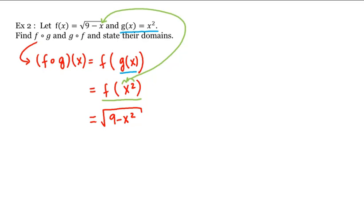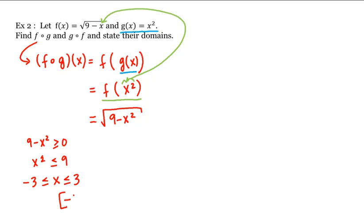Looking at this final form, what is its domain? What's under the square root — namely 9 minus x squared — has to be greater than or equal to 0, which means x squared has to be less than or equal to 9, which means negative 3 has to be less than or equal to x, less than or equal to 3. So the domain of the final form is the interval from negative 3 to 3. But we also have to make sure x is in the domain of g. The domain of g is all real numbers, so any value in this interval is fine. This is the domain of f composed with g.